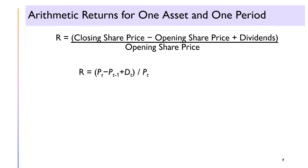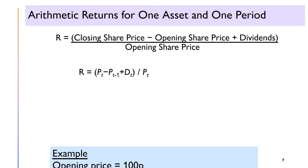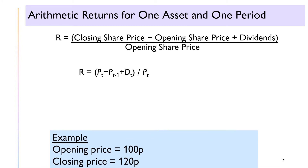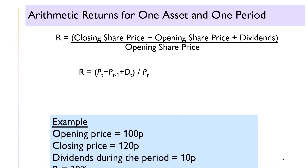The arithmetic return for 1 asset and 1 period consists of change in price and income. The total return is compared with the initial price to obtain the percentage rate of return. Let's try this example. Using the formula, the answer is 30%.